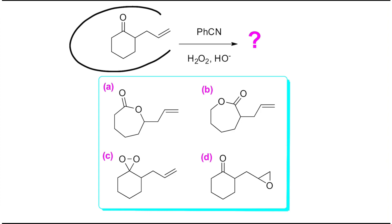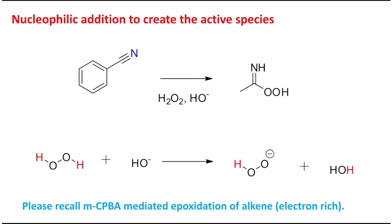Before going into details, I request students to please look at the reagents carefully — what are the chemical properties or functional groups present in the reagent. So first of all, there are three things: this molecule, this benzo nitrile, and this hydrogen peroxide alkaline. This reagent has two groups: one is alkene, another is carbonyl. And this is benzo nitrile with hydrogen peroxide alkaline.